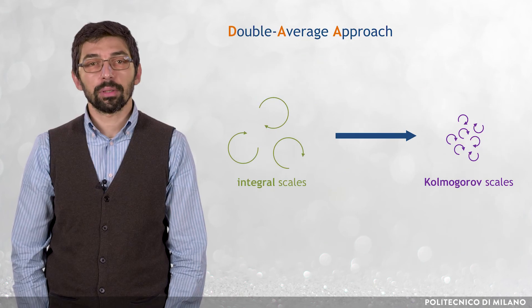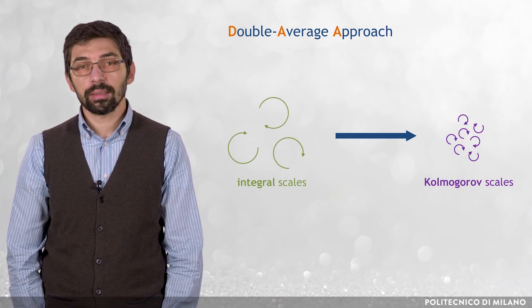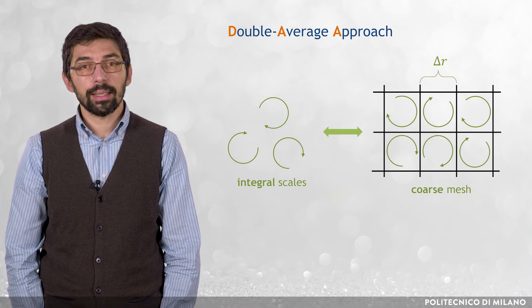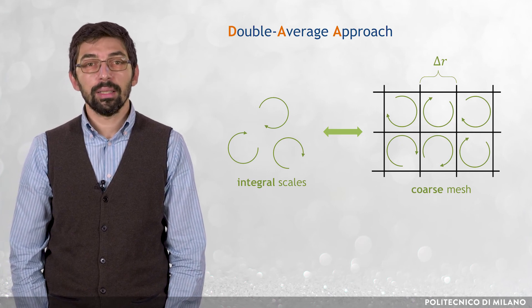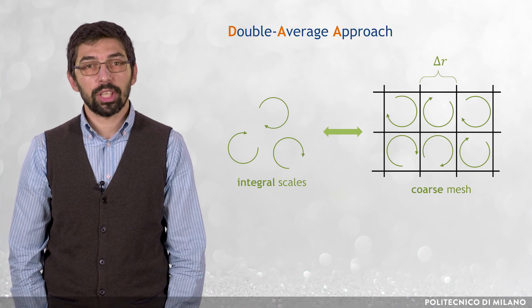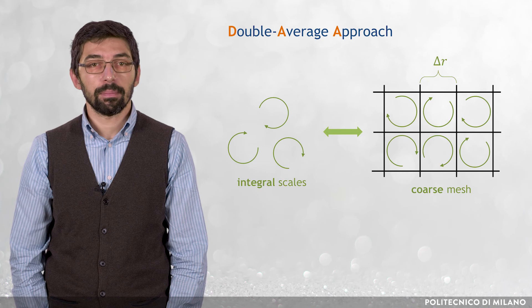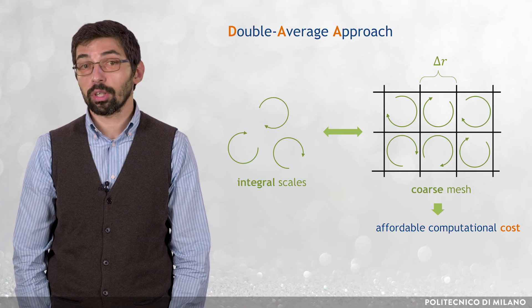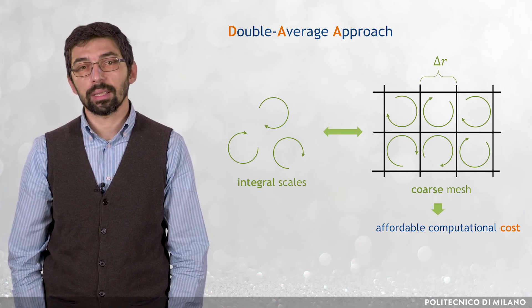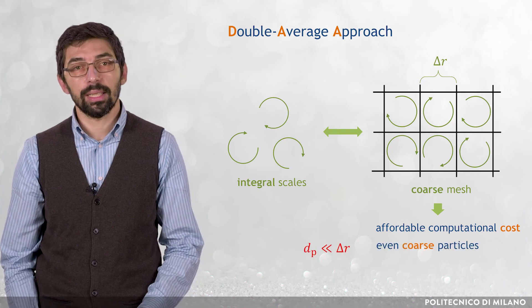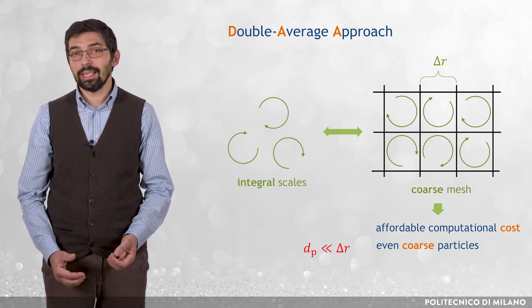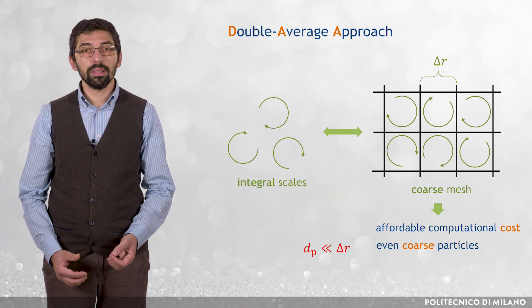Whatever the average operator is, double average methods filter the noise due to turbulence and therefore the correct size of the computational cells delta R is dictated by the need to accurately reproduce the integral spatial scales of turbulence, which are generally of the order of the macroscopic flow domain. The possibility to use a coarse mesh makes the computational cost affordable even for complex, highly turbulent flows of engineering interest. At the same time, the additional constraint d_p smaller than delta R must be fulfilled. The fact that delta R is not as tiny as in the direct method opens up the possibility to simulate turbulent slurry flows with coarser particles.